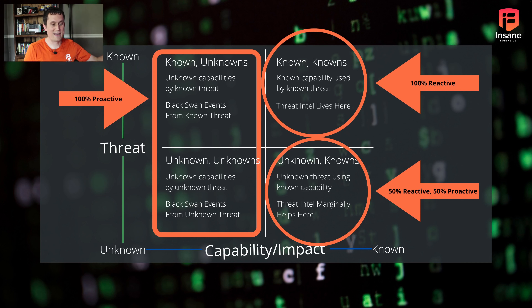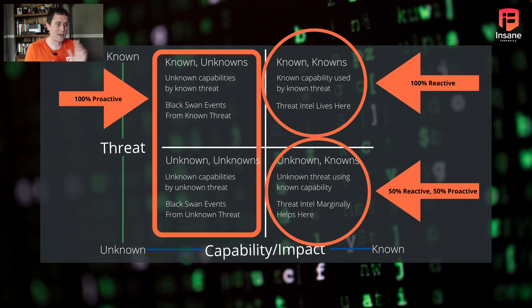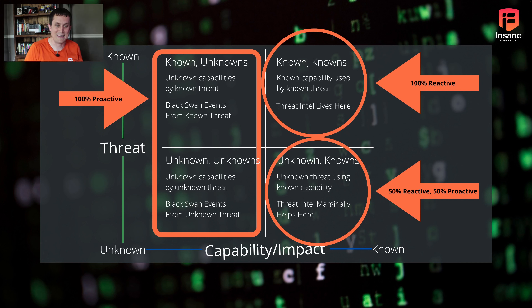The 100 percent proactive approach is when you're looking for unknown capabilities — the left side of the X axis. Here you're 100 percent proactive because even if you know the threat, you're still assuming the attacker is going to do research and development. The attacker is still developing tools we haven't seen yet. When you look for unknown capabilities regardless of the threat, you're in the 100 percent proactive category — you don't have an intel report saying adversary X has this tool.